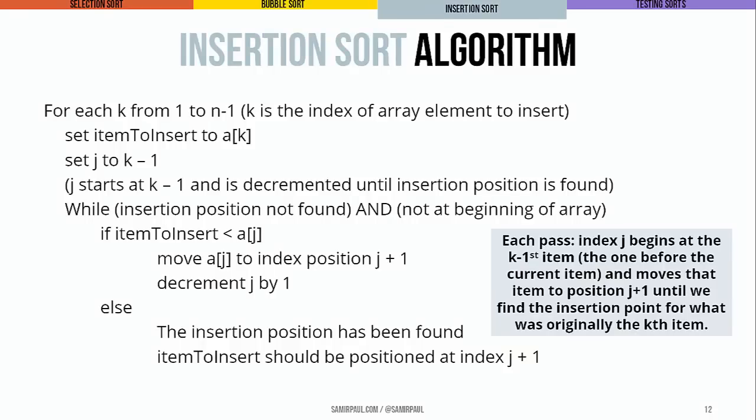Here's a description of the insertion sort algorithm. We have a counter k going from 1 to n minus 1, where k is the index of the element we're trying to insert into its proper place. We get that element and set a counter j to k minus 1 — the element directly to the left. Then we decrement j until we find the right place to insert the element. The net result is that after each pass, if we just looked at element k, the first k elements are now in sorted order.